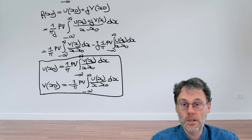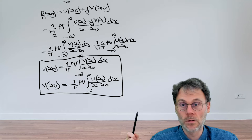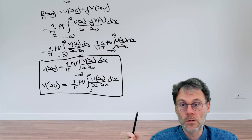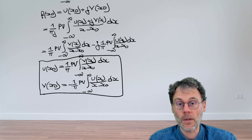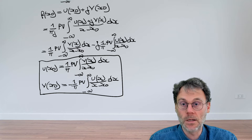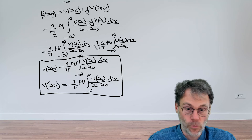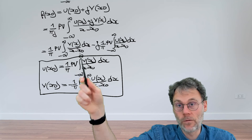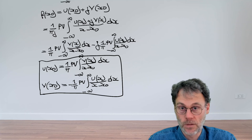These are the Kramers-Kronig dispersion relationships. They tell us that if a function vanishes in the upper half plane at infinity, the real part at any point can be computed from an integral over the imaginary part, and vice versa. The real and imaginary parts are not independent — they are intimately related through these formulas. Equivalently, u and v are the Hilbert transforms of each other.